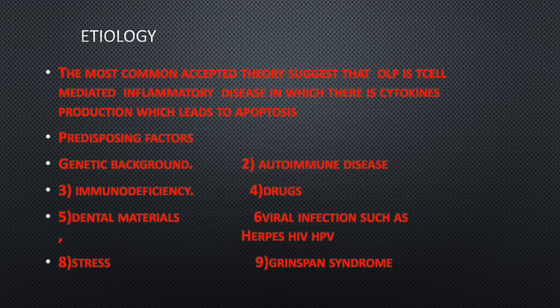Regarding etiology, the most commonly accepted theory suggests that oral lichen planus is a T-cell mediated inflammatory disease in which there is cytokine production leading to apoptosis. Oral lichen planus triggers T-cells, causing the release of cytokines, which in turn cause apoptosis and destruction of cells. This is the most accepted pathogenesis of oral lichen planus.